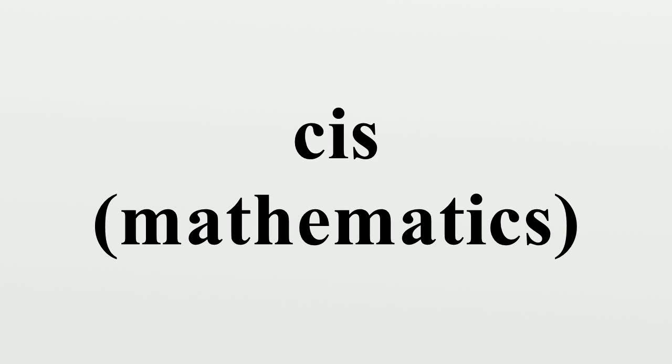cis is a form of mathematical notation in which cos is the cosine function, i is the imaginary unit, and sin is the sine.